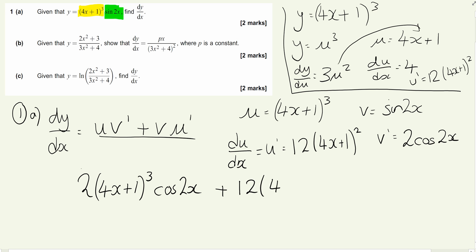Then we've got v times u', so we're going to have 12(4x + 1)² multiplied by sin(2x). You could try to spend lots of time tidying this up, but that's not actually a problem. This would be absolutely fine as your final solution. It's only two marks, and we need to get moving on to part b.